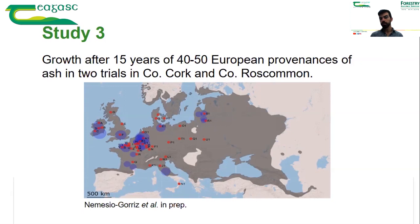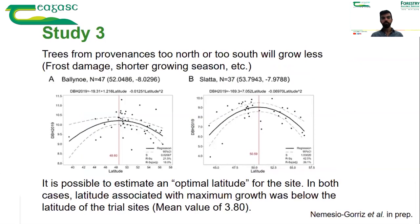The trials are in County Cork and County Roscommon, and they have 50 and 40 European provenances growing in them respectively. We measured growth after 15 years to assess the performance of the different provenances. The map shows in red the European provenances used for the study, and in blue the trial locations. We assumed that provenances coming from too far north or south will not grow optimally.